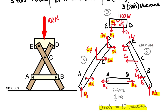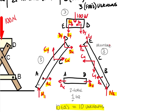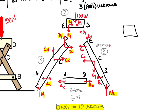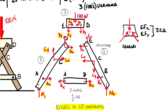Ten equations equals ten unknowns, giving enough information to solve the problem. Just like for single bodies you checked for three or fewer unknowns, here we check using three equations for multi-force bodies, one equation for a two-force body, and two equations for a concurrent force body — where all forces intersect at one point, acting like a particle, allowing summation of forces in X and Y only.